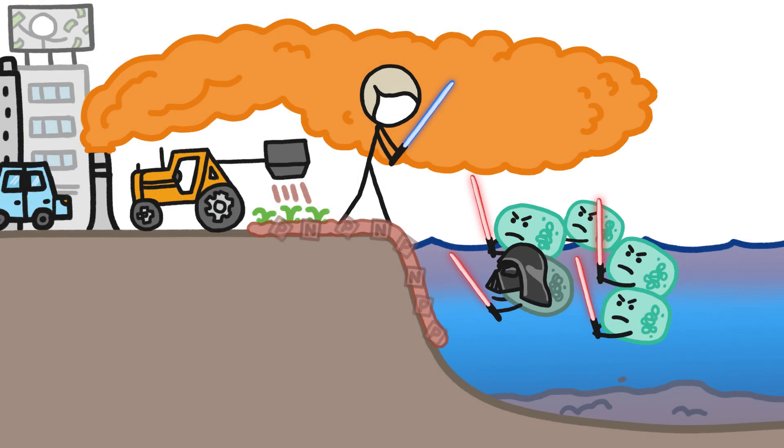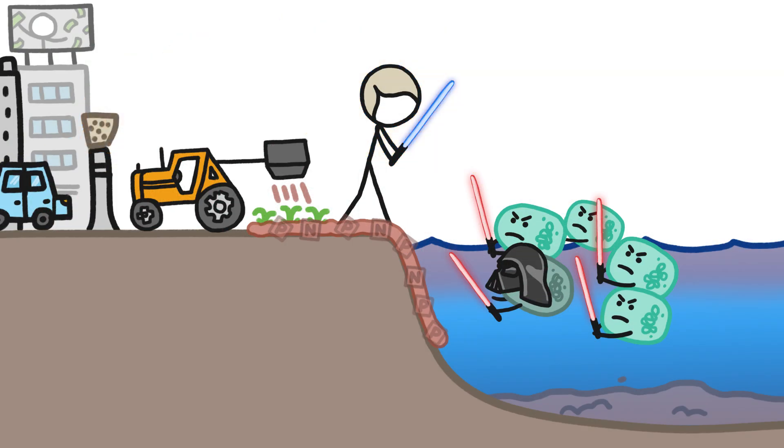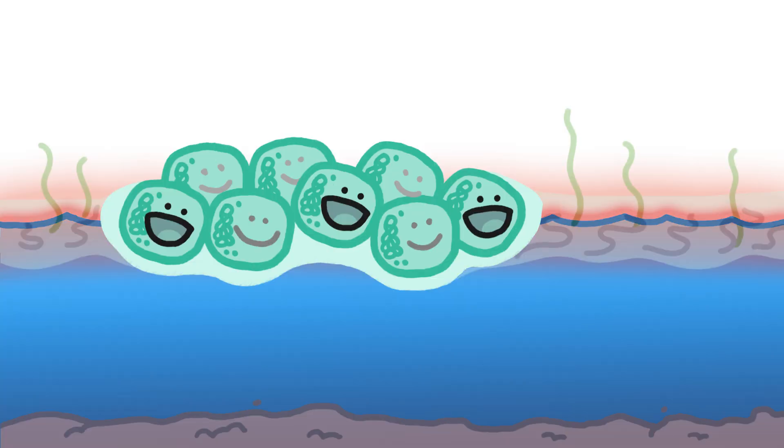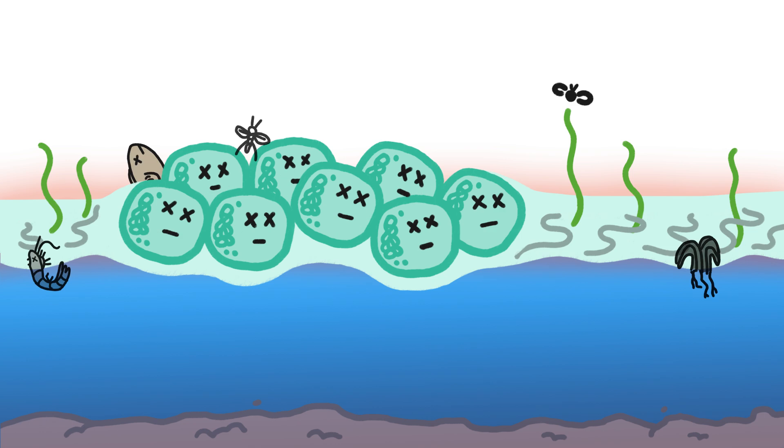To keep cyanobacteria at bay, we need to stop warming the planet, and to farm in a way that doesn't send nutrients into waterways. Until we do, the little creatures that first gave us oxygen are going to keep on blooming, and dying, and turning our oceans and lakes to the dark side.